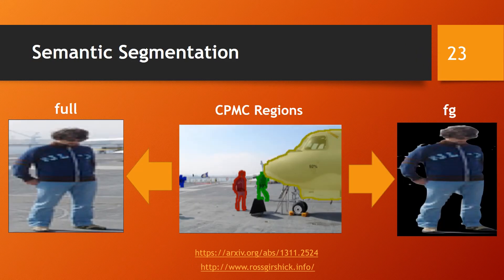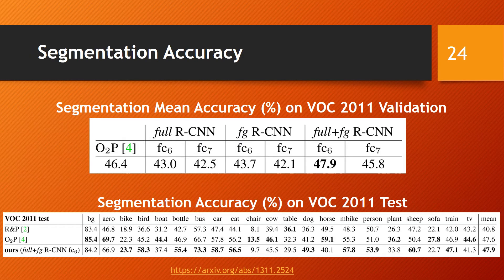The RCNN is later extended to perform semantic segmentation tasks. The middle image shows the detected regions. The full strategy on the left computes CNN features directly on the warped sample. The FG strategy on the right computes CNN features only on the region's foreground mask. The table on top shows results on the VOC 2011 validation set for three segmentation strategies, compared with the current leading semantic segmentation system, O2P. The table on the bottom demonstrates that the paper's best performing segmentation strategy achieves state-of-the-art results on the VOC 2011 test set.